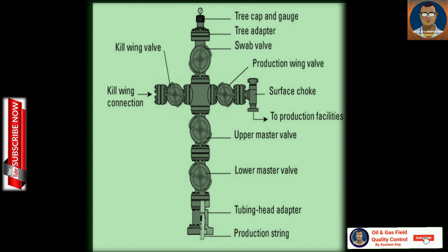Second: Swab Valve. The swab valve is located at the top of the christmas tree and provides access to the well for wireline or coil tubing operations. This allows for well interventions, maintenance or logging without needing to kill the well. It plays a crucial role in maintenance and troubleshooting operations.